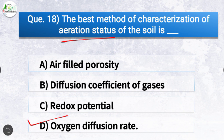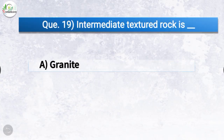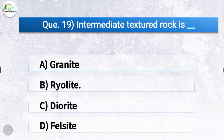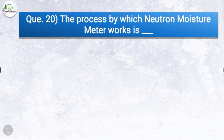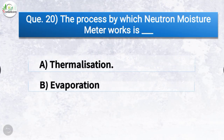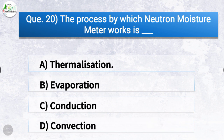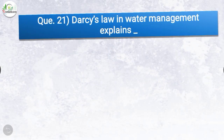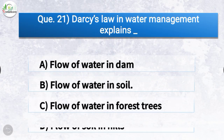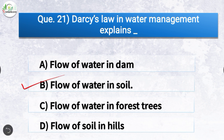Question number nineteen: the correct answer is option B, rhyolite. Question number twenty: the process by which a neutron moisture meter works is? The correct answer is option A, thermalization. Question number twenty-one: Darcy's law in water management explains? The correct answer is option B, flow of water in soil — it explains the flow of water in soil.